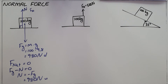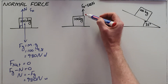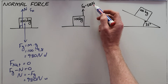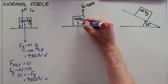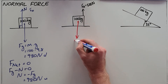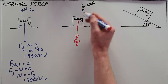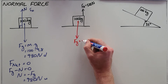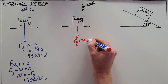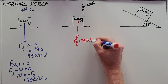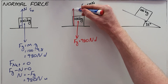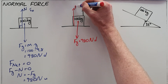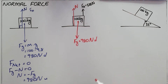The second example has the same object, but now it also has an applied force of 500 Newtons attempting to lift the object upward. The gravitational force on this object does not change — it is still a 100 kilogram object, so the gravitational force is also 980 Newtons downward. The difference now is that there are two forces acting upward: the normal force and the applied force.